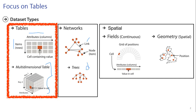We can directly go through with conditional formatting and decision trees. For spatial data, we have fields as well as geometric data. For fields, examples include electronic fields and magnetic fields. For geometric data, we have spatial data with positions and nodes.